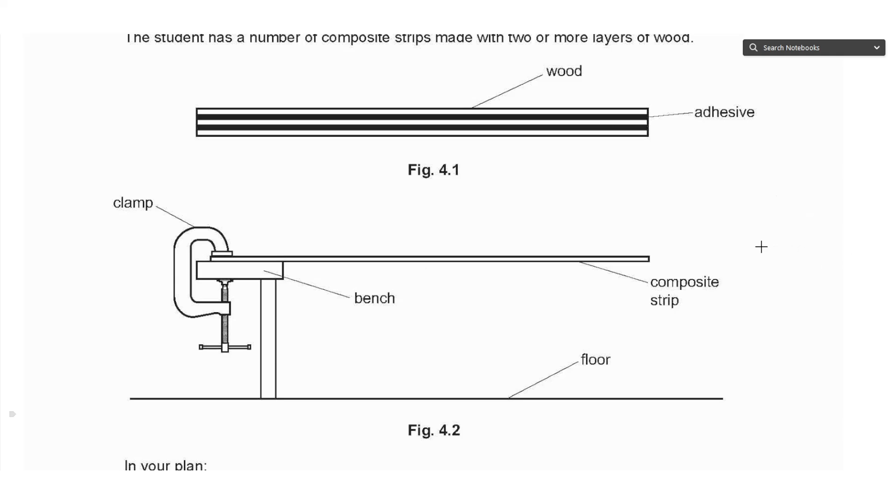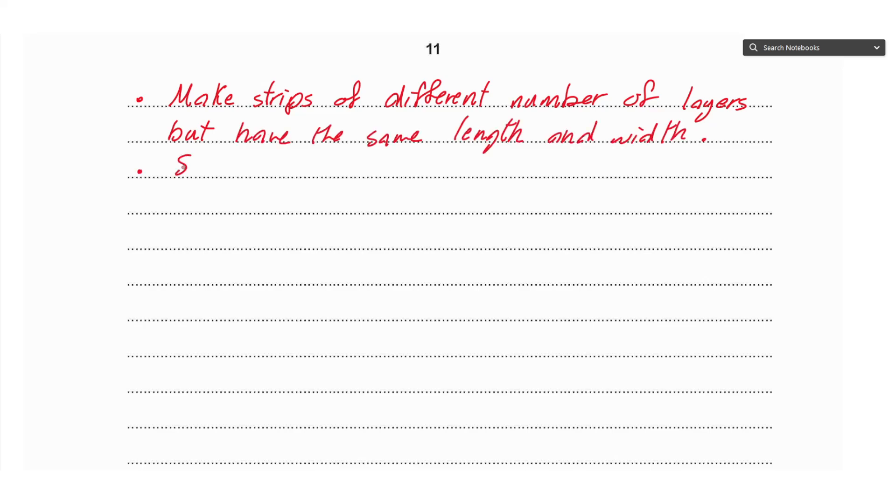By adding a pointer here towards a meter rule, and I'm going to make sure that the rule is vertical using a set square. So we label that also—set square and pointer. Now we can start writing. Make strips of different number of layers but have the same length and width. Then set up apparatus as shown in the diagram using the first strip. Then record the reading R₁ on the meter rule without any loads on the strip.